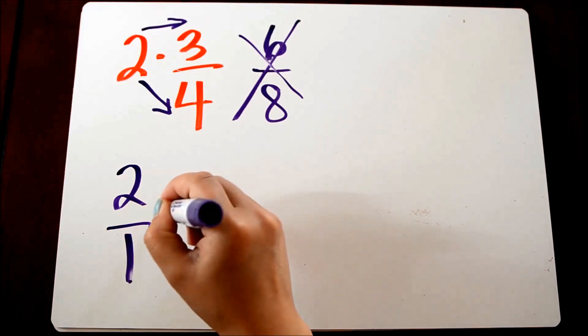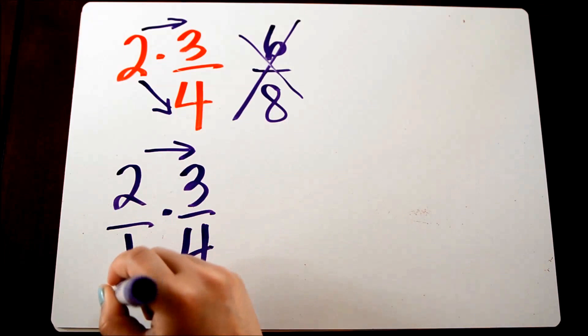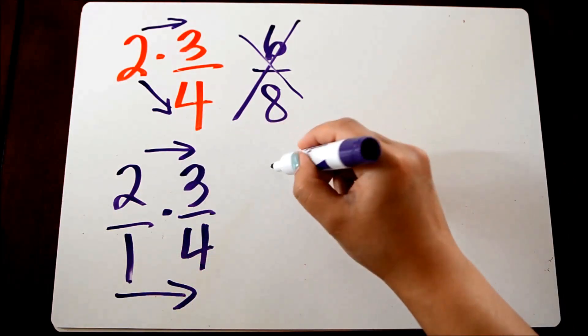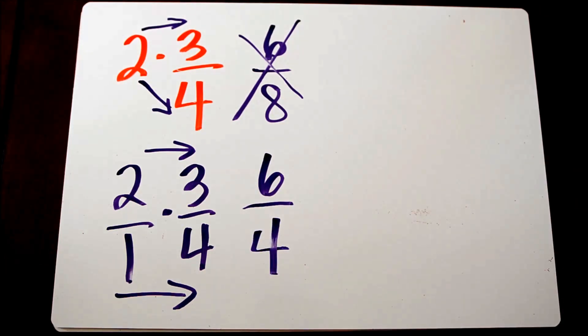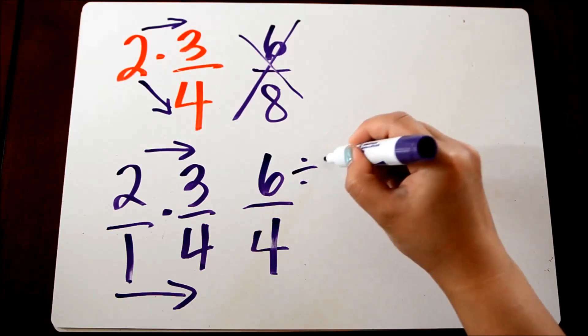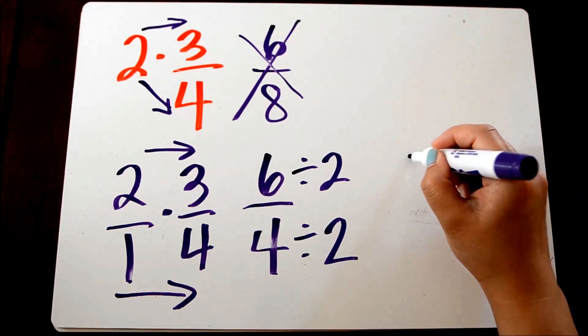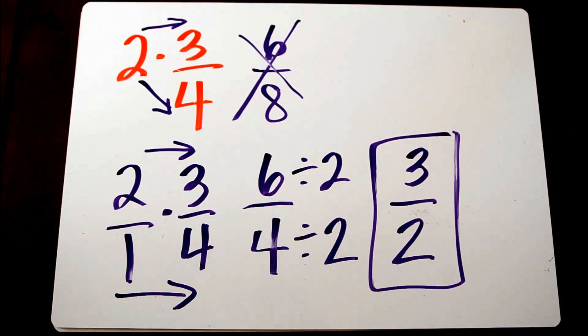So 2 over 1 times 3 fourths is really 2 times 3, which is 6. And we get 1 times 4, which is 4. We're going to reduce this by dividing the numerator and the denominator by 2. And our final answer would be 3 over 2, or 3 halves. So that concludes our lesson on multiplying fractions.